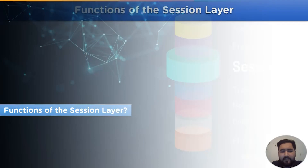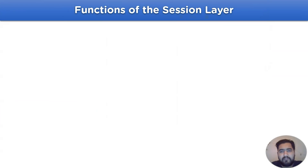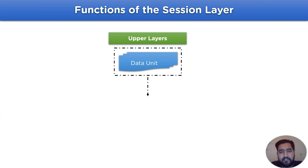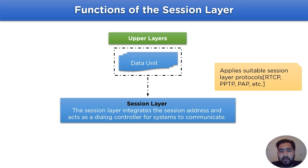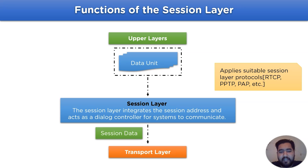Let's take a look at the actual working steps of the session layer in a communication channel. The session layer receives data units from the upper layers in the OSI model or from the communication channel, where it integrates the data with a session address. The session layer is responsible for maintaining the dialogue between systems connected in the communication channel. It applies multiple protocols for secure and safe transmission — for example, RTCP, TPTP, and PAP. After that, the session data is transferred to the lower layers in the OSI model.